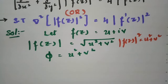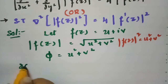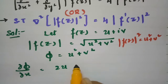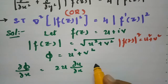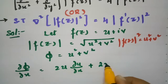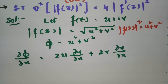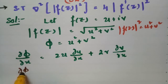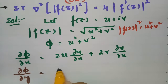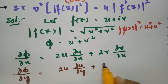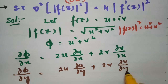Now I will differentiate with respect to x for one time and y for one time. So ∂φ/∂x = 2u·(∂u/∂x) + 2v·(∂v/∂x). And if I make a derivative with respect to y, then ∂φ/∂y = 2u·(∂u/∂y) + 2v·(∂v/∂y).